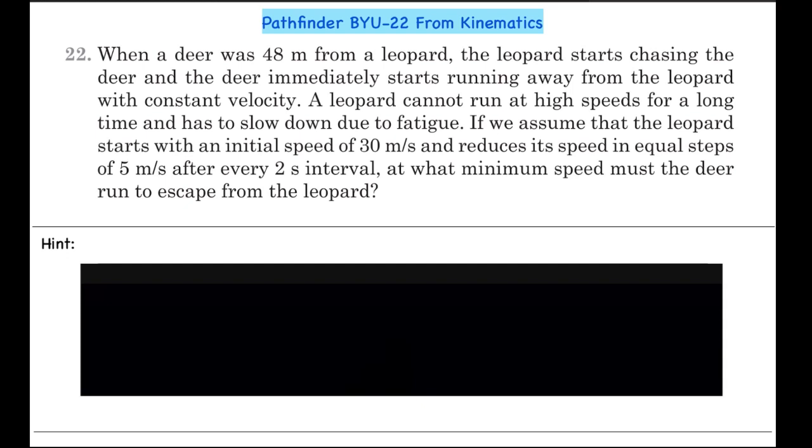Now let's get into the question. When a deer was 48 meters from a leopard, the leopard starts chasing the deer and the deer immediately starts running away from the leopard with constant velocity. A leopard cannot run at high speeds for a long time and has to slow down due to fatigue. If you assume that the leopard starts with an initial speed of 30 meters per second and reduces its speed in equal steps of 5 meters per second after every two second interval, at what minimum speed must the deer run to escape from the leopard?